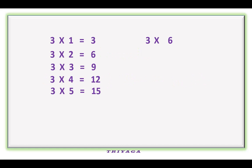3 6s are 18, 3 7s are 21, 3 8s are 24, 3 9s are 27, 3 10s are 30.